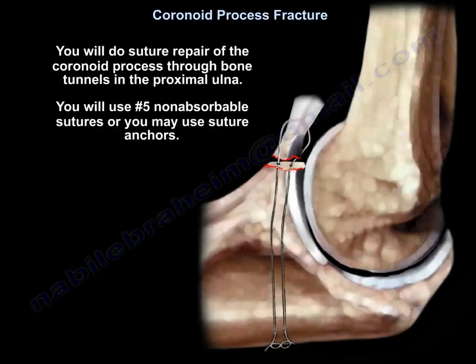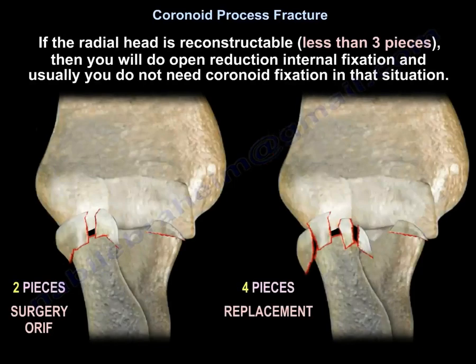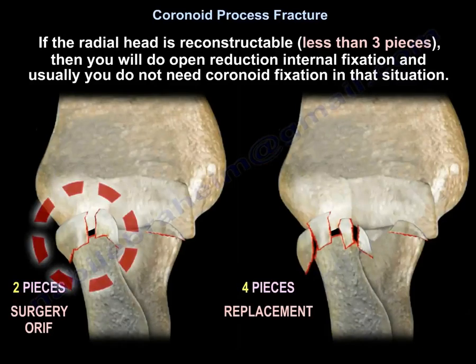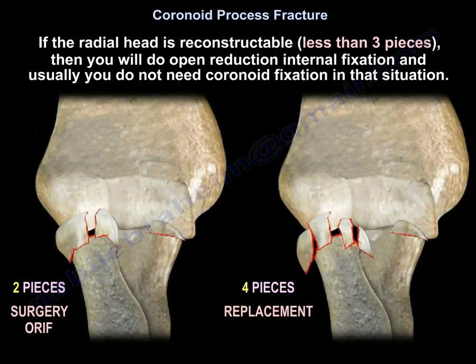You will do suture repair of the coronoid through bone tunnels in the proximal ulna, using number five non-absorbable suture, or you may use suture anchors. If the radial head is reconstructable — meaning less than three pieces — then you will do open reduction internal fixation, and usually you don't need coronoid fixation in that situation.